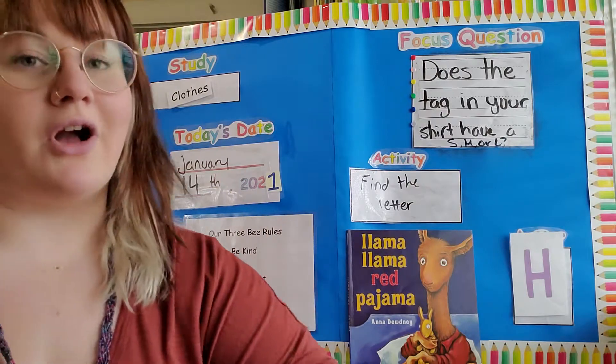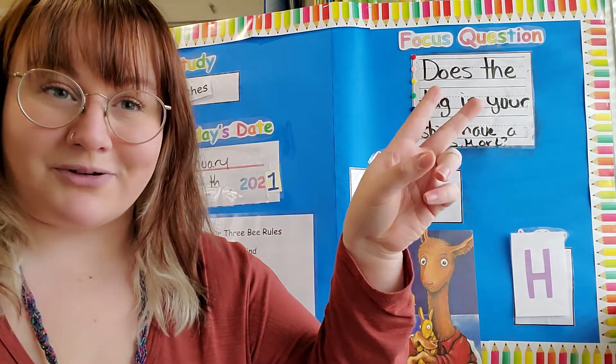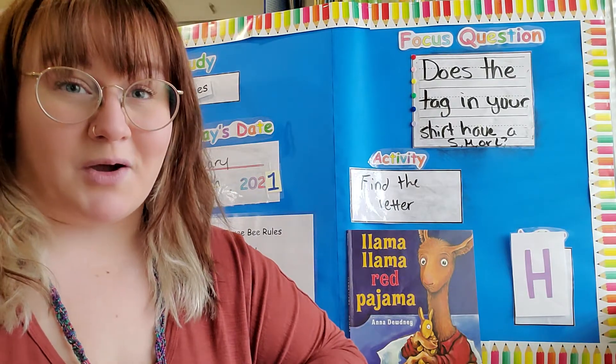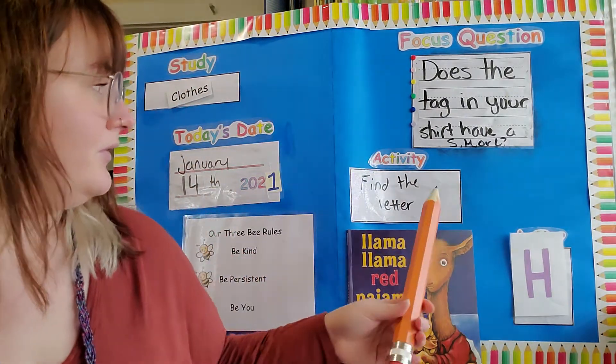Our three B rules are: be kind, be persistent, and be you. And I know all of you are doing that at home, so I'm very proud of you for following through with our B rules.